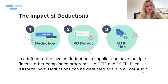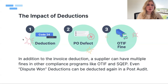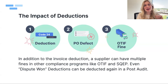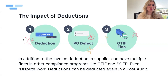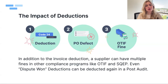For example, a shortage deduction — usually a Code 24 — typically generates a PO defect through the SQEP program and may also generate an in-full fine through Walmart's OTIF program. Each must be disputed separately. And even after winning all three disputes, a post audit can come through two years later claiming the fine was still valid, requiring you to dispute all over again. It can be quite a headache. We have in-depth resources on SQEP, OTIF, and post audits on Supplier Wiki.